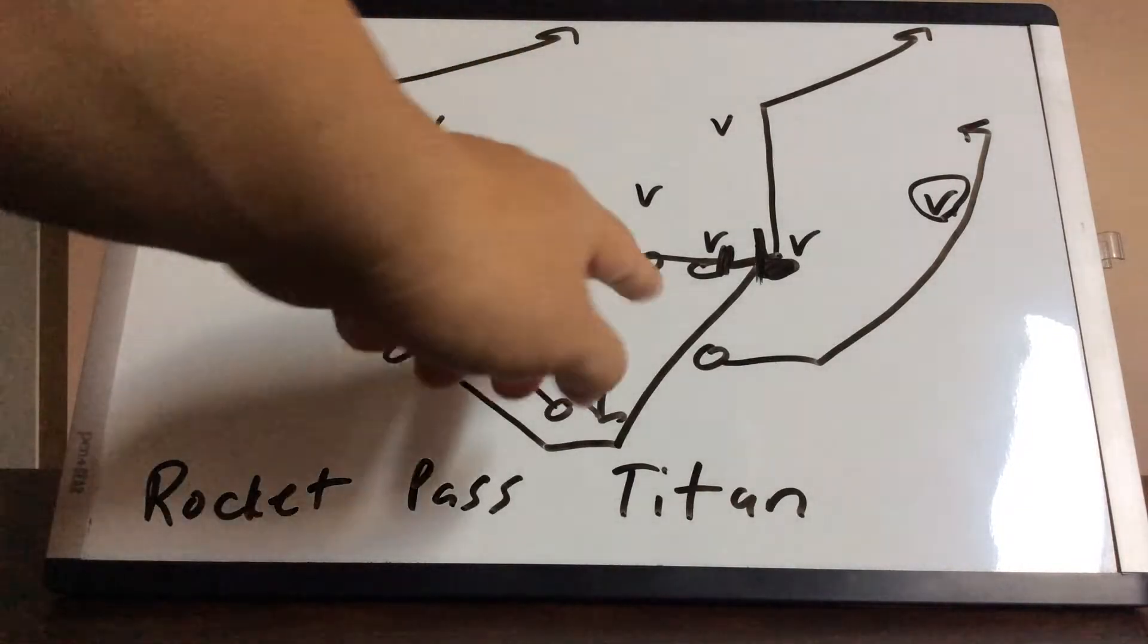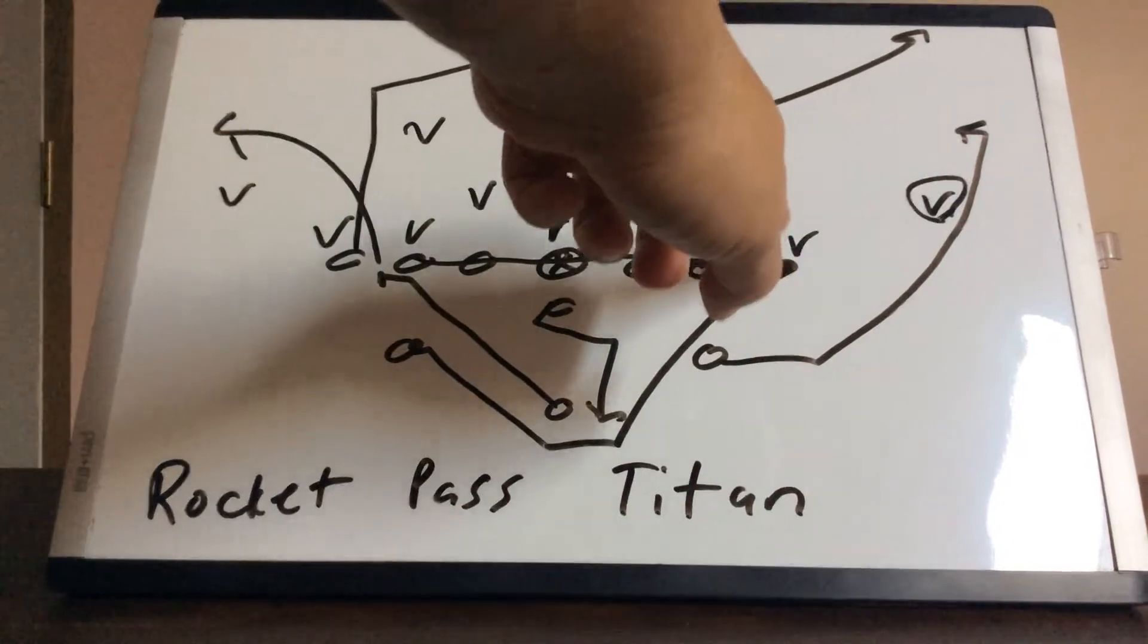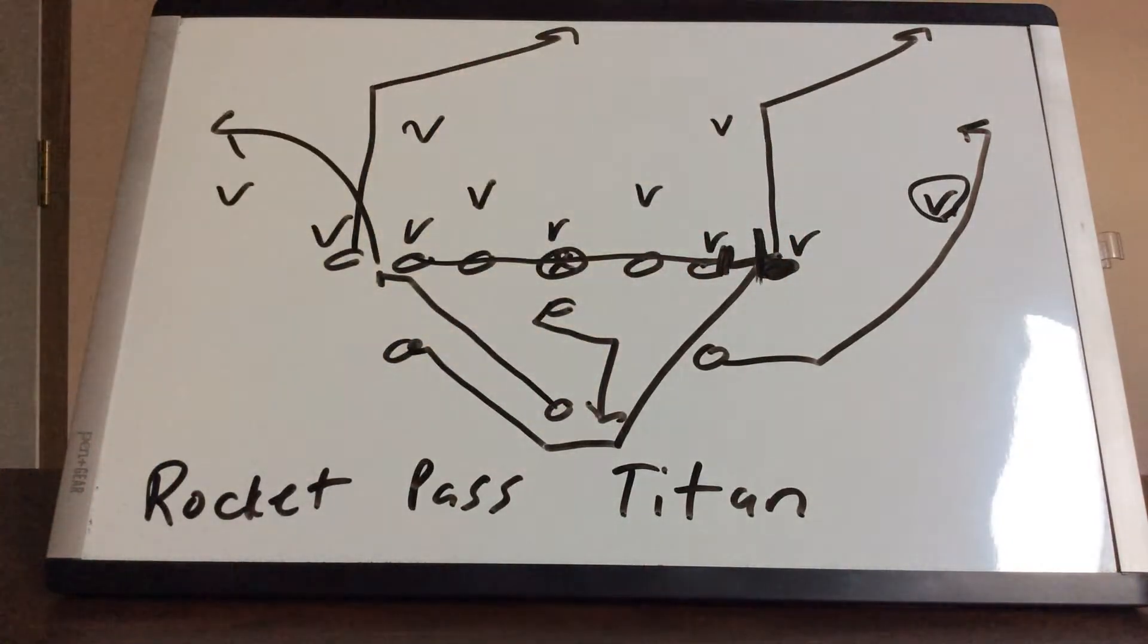The quarterback is going to fake the toss, five step drop. The receiver who's in a compressed formation is going to run 10 yards down the field and break it 45 degrees and the quarterback's simply going to throw him the ball.